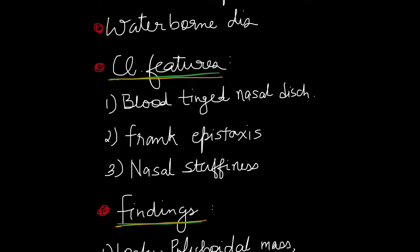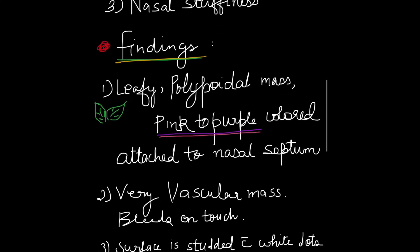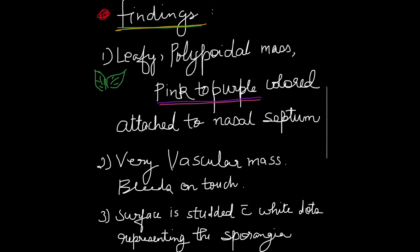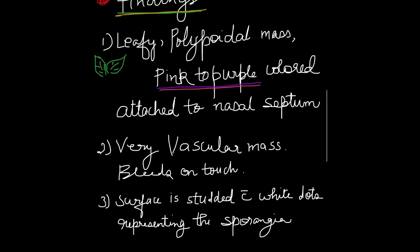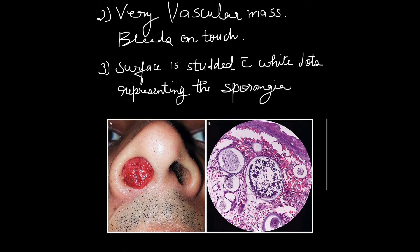Findings we can see on examination: first, it would be a leafy polypoidal mass which would be pink or purple in colour, attached to the nasal septum or the lateral wall. Sometimes it also extends into the nasopharynx and may hang behind the soft palate. Secondly, this is a very vascular mass and it bleeds on touch.